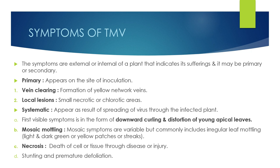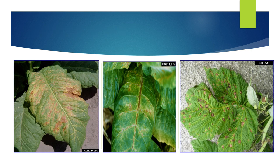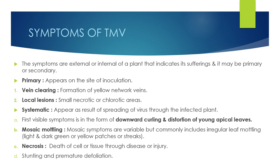Systemic or secondary symptoms appear as a result of the spreading of the virus throughout the infected plant. The first visible symptom is in the form of downward curling and distortion of young apical leaves. Mosaic symptoms are variable but commonly include irregular leaf mottling and necrosis — the death of cells or tissue through disease or injury.